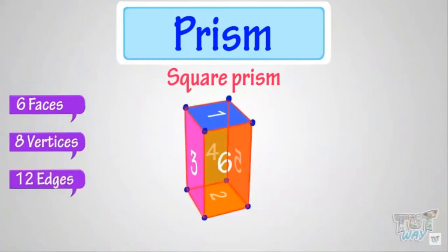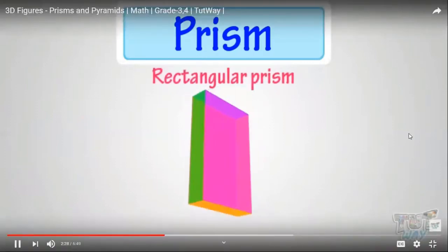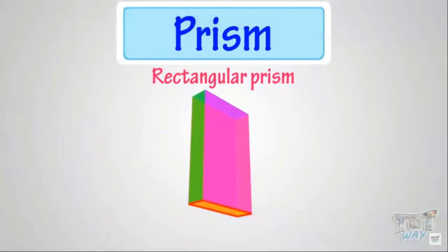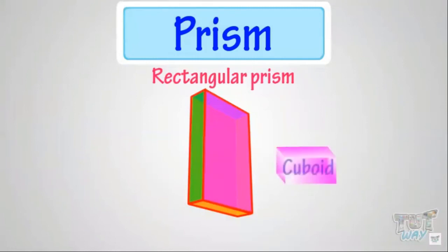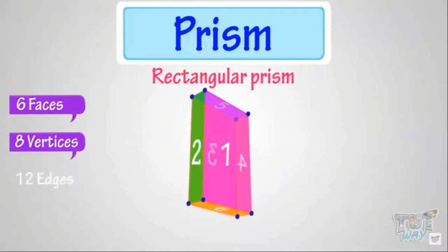Now let's learn another type of prism. This is a rectangular prism because its top and bottom faces are rectangular and all other faces are rectangular too. This is the same as a cuboid shape, so it has six faces, eight vertices, and twelve edges.